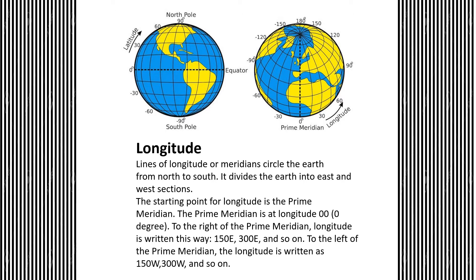Longitude: lines of longitude, or meridians, circle the earth from north to south. It divides the earth into east and west sections. The starting point for longitude is the prime meridian. The prime meridian is longitude zero, or zero degrees.